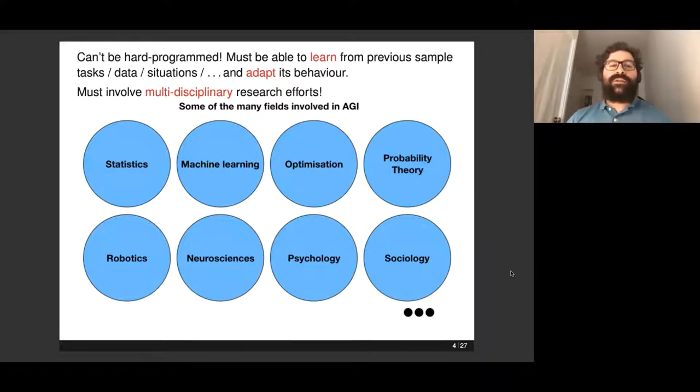This is obviously a very multidisciplinary effort and there's a lot of fields involved in AGI. In particular, the first row is the one I'm more interested in: statistics, machine learning, probability theory, and optimization are all key topics I've been working on for the past few years. But AI obviously requires research from neuroscience, psychology, robotics, and so on. This effort really requires coordination of many disciplines with possibly different topics and languages. That's what makes it so fascinating.